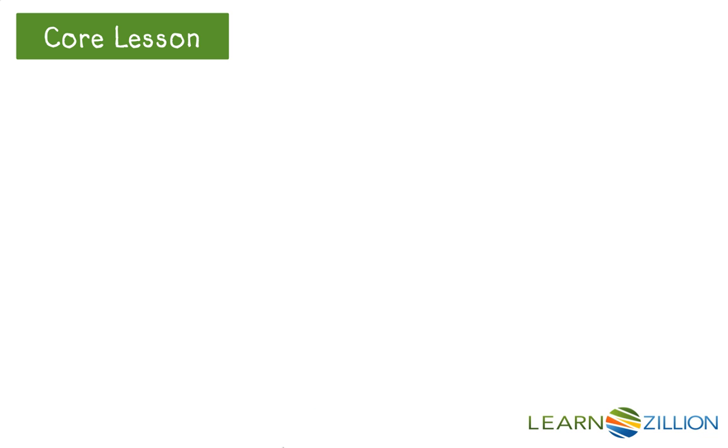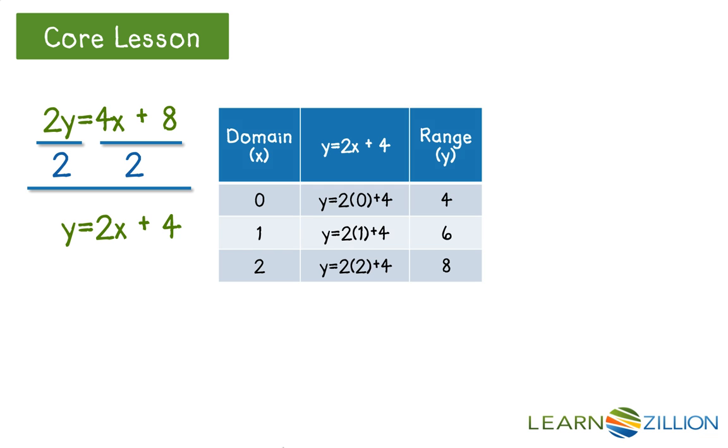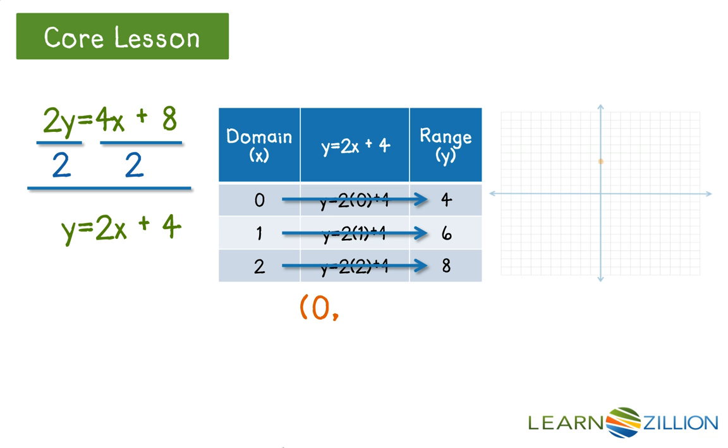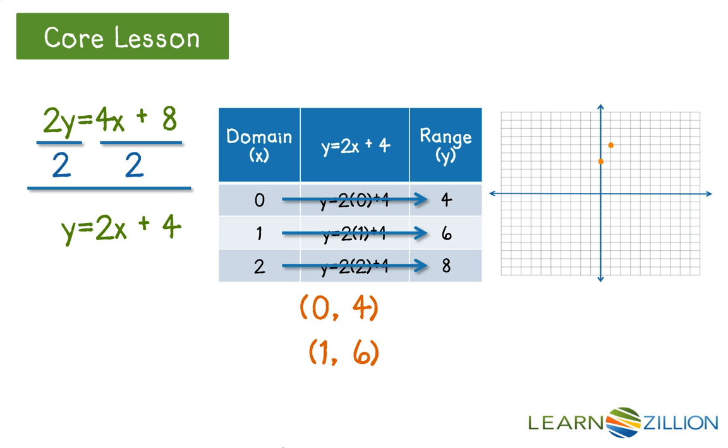Now let me show you that if you rearrange the function to start with y equals, you will get the same table of values and graph as we did before. If we have 2y equals 4x plus 8, we solve for y by dividing both sides by 2. And when we do this, we get y equals 2x plus 4. And if I put in the same domain values as I did before, I end up with the exact same range values. Also, if I turn these into coordinates and I plot them on my graph, I get the exact same graph as I did before.